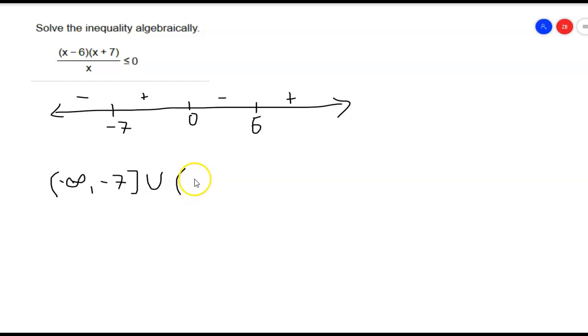And I'm going to go from 0 to 6. And I will include 6 because 6 makes our function equal to 0, which is fine because it's not a strict inequality. So that should be my answer right there.